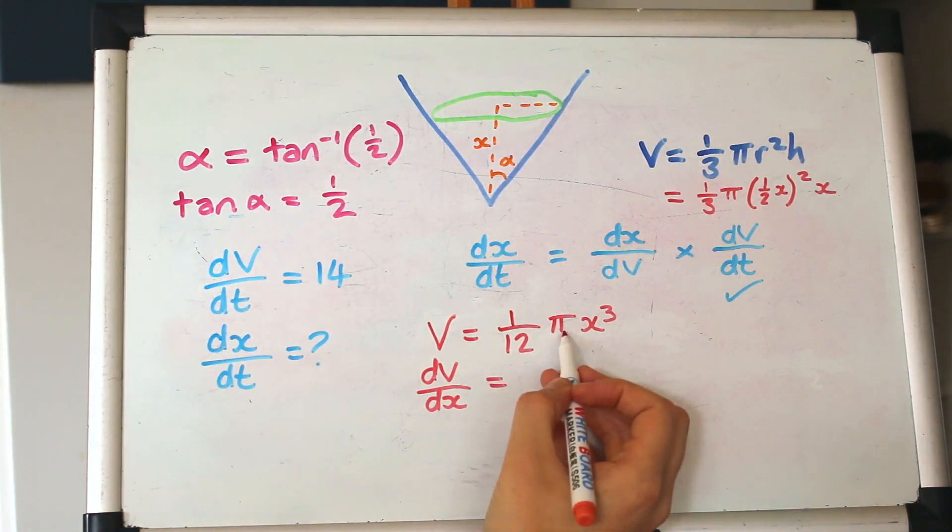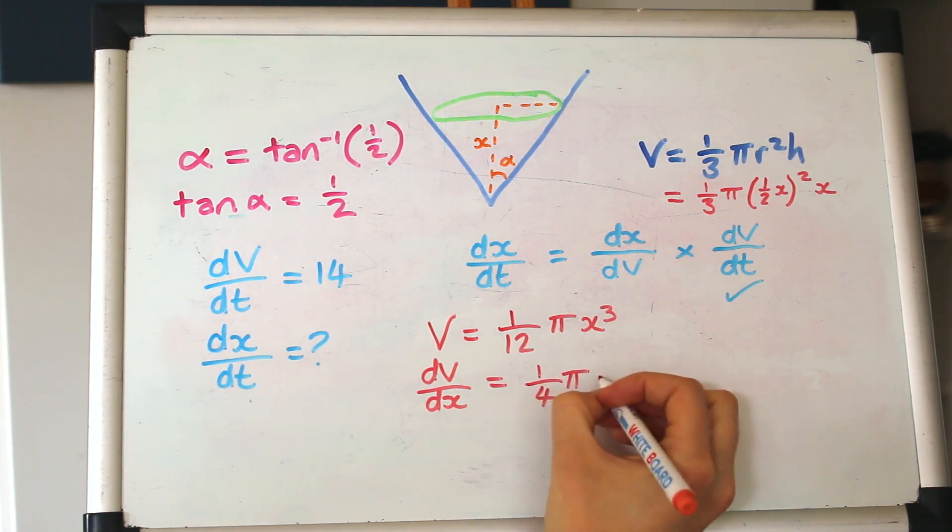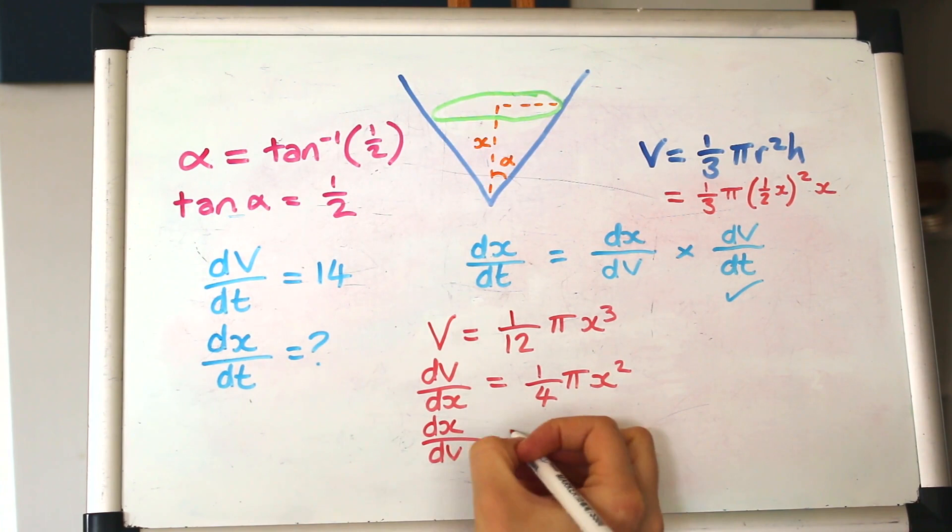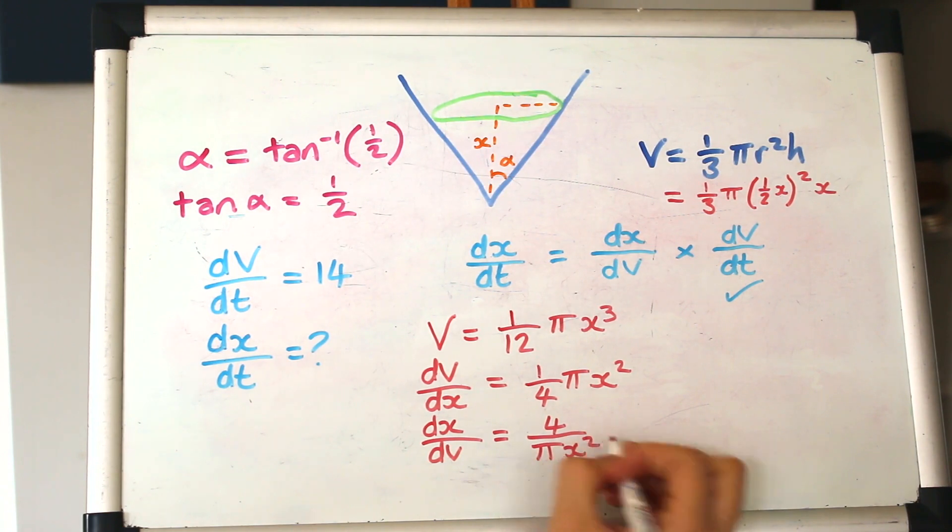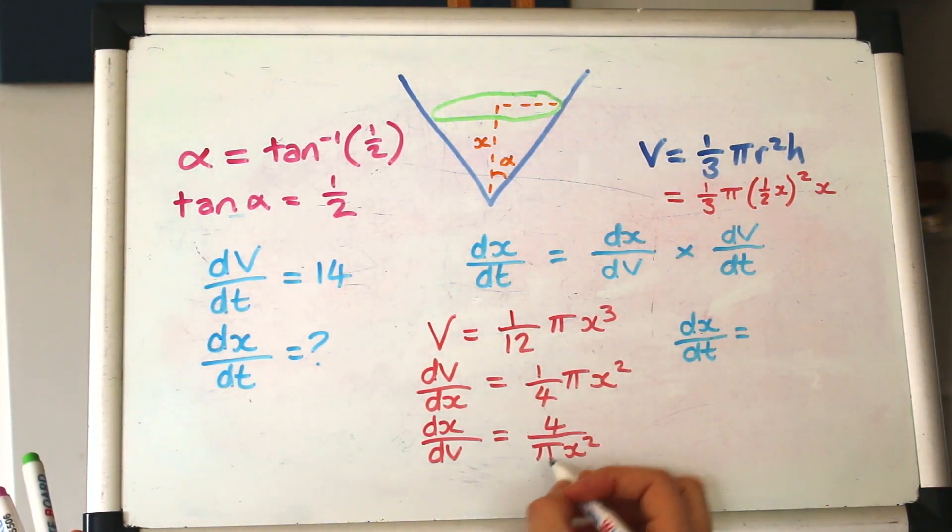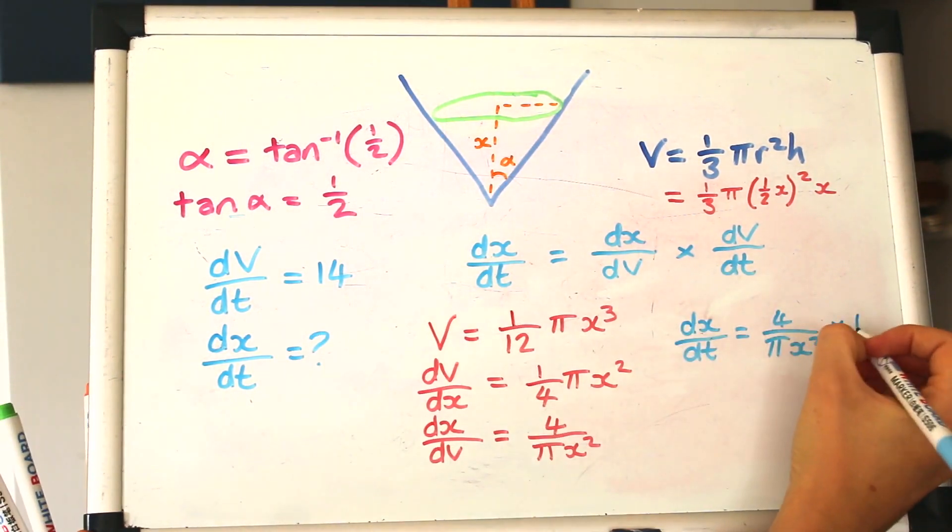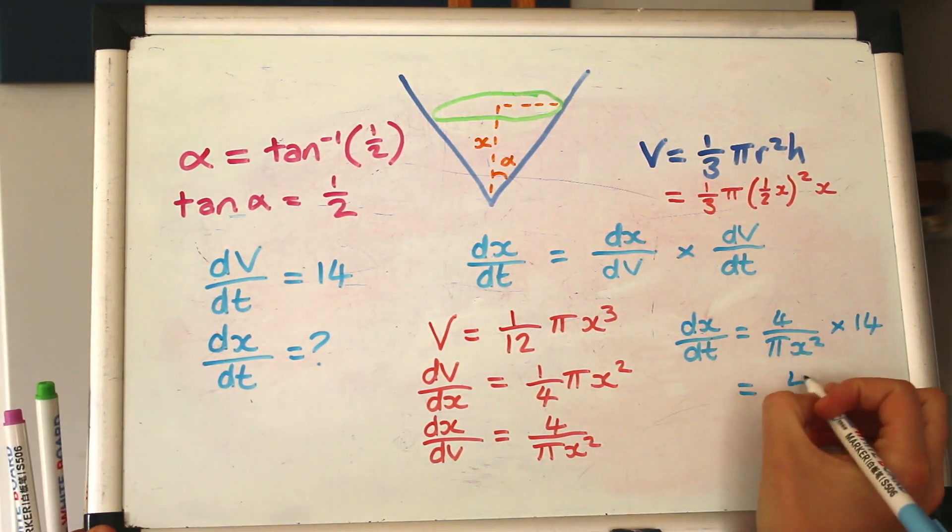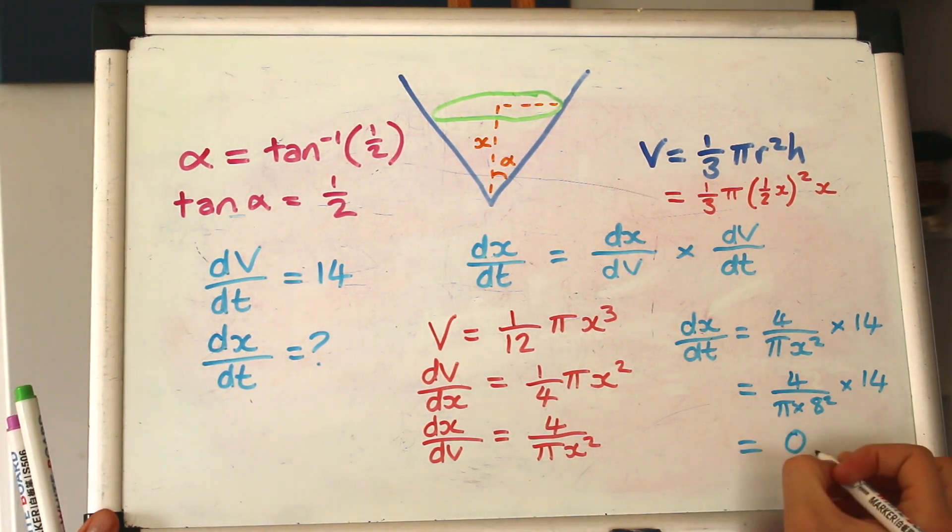Again, pi is just a number, so just hold it there and bring the 3 across, so we'll have quarter pi x squared. And now we actually want dx by dV, so we need to flip that upside down. So the 4 will become the thing on the top, and the pi and the x squared will go down to the bottom. Okay, so now we can go back and fill in what we know. So dx by dt will be this stuff here, multiplied by dV by dt, which is 14. And we're given an x at this point, I think it's 8, yep, 8. So putting that into the calculator. And I make that to be 0.28.